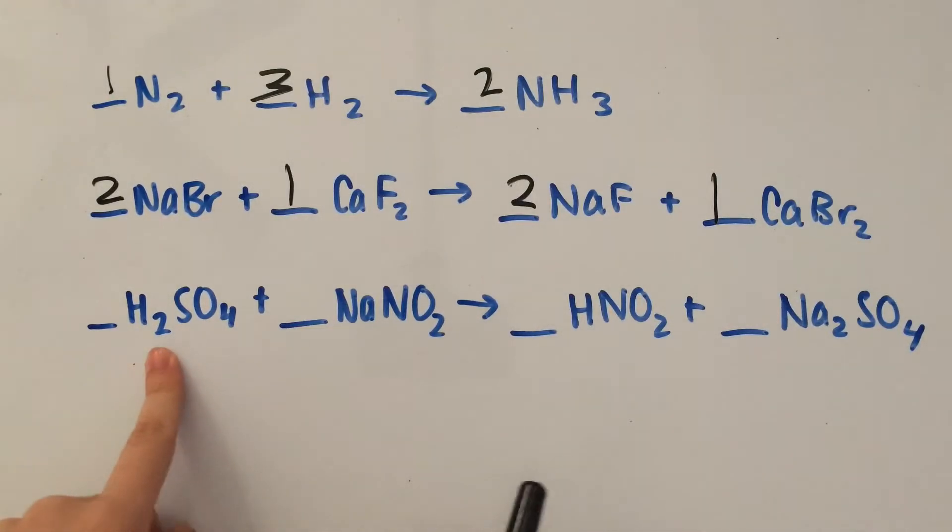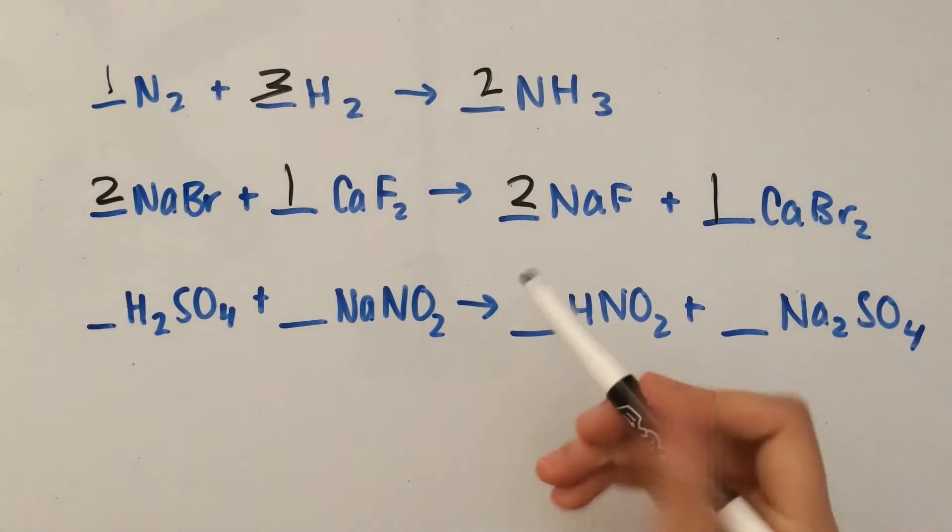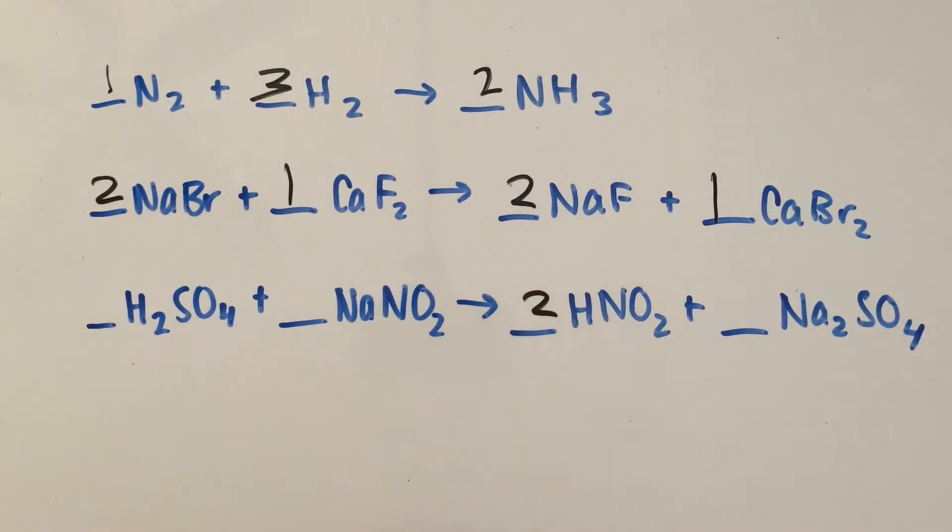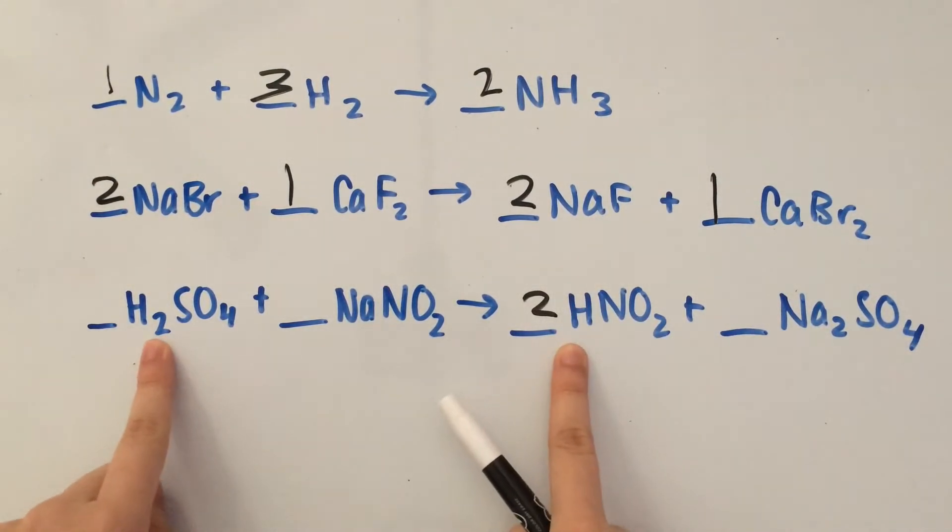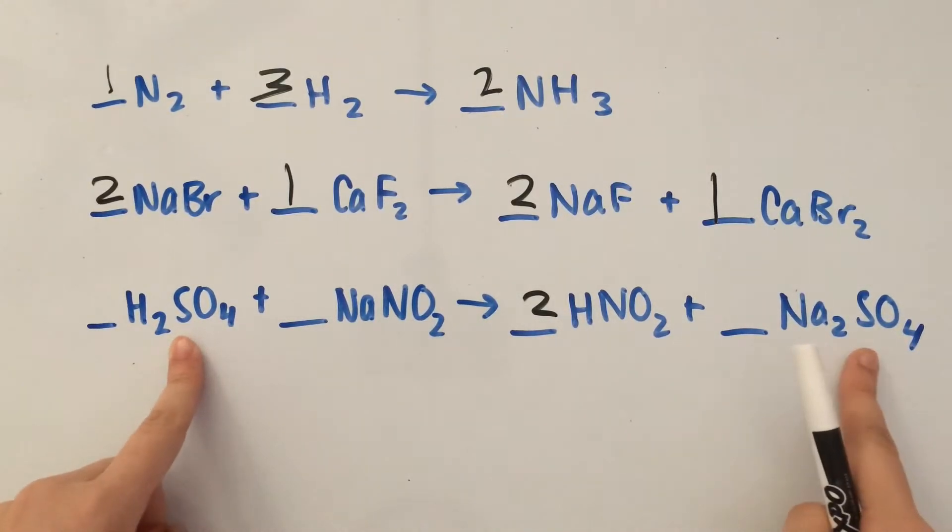Last one. Two H's. Looking on the right side we have one H, so let's put a two. We're done with the H's. Now sulfur - we have one sulfur over here, so that's good.